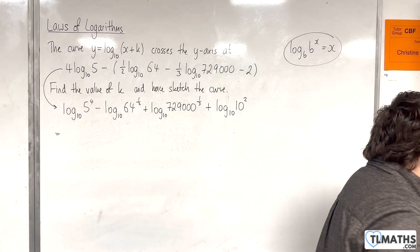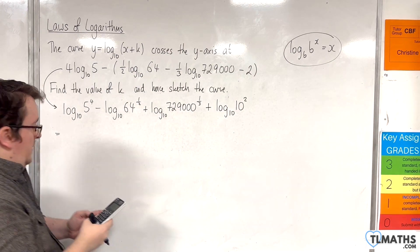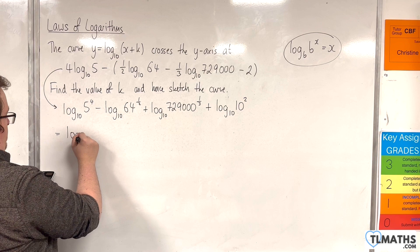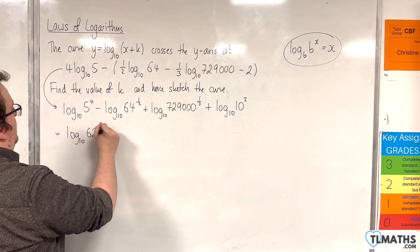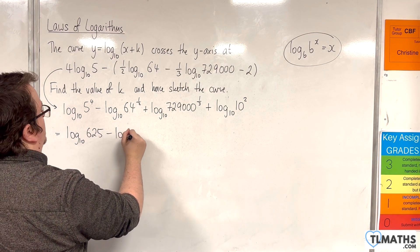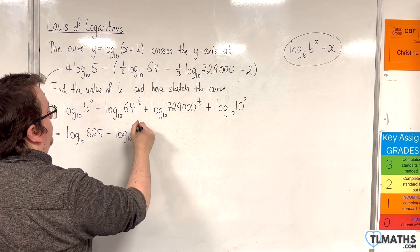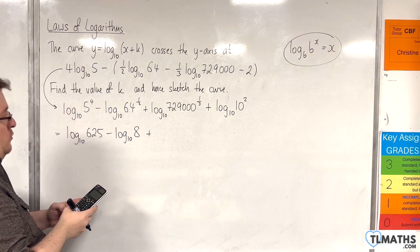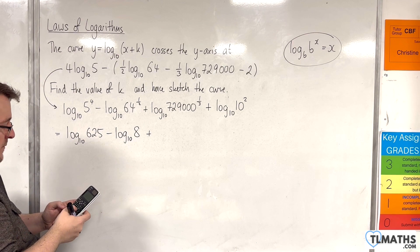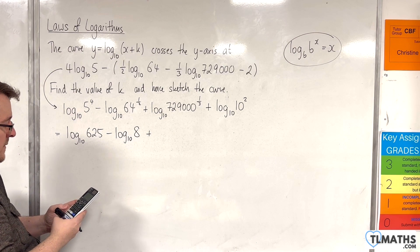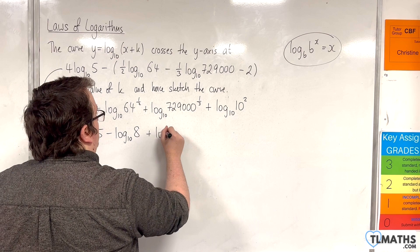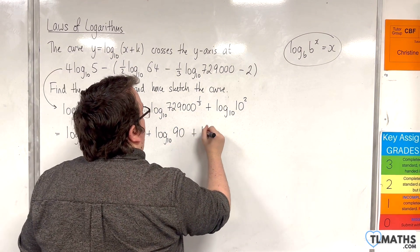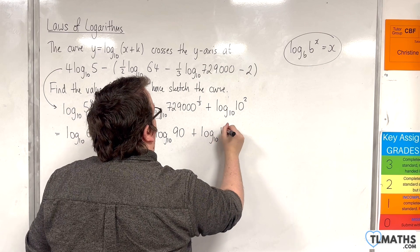So, let's see what we have here. Now 5 to the power of 4, this is log base 10 of 625. Take away log base 10 of 64 to the half, which is 8. Then we have 729,000 to the power of 1 third is 90, so that's log base 10 of 90. And then we've got plus log base 10 of 100.